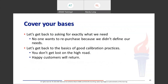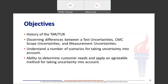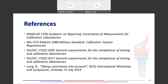We want to get back to asking for exactly what we need. If you're asking for a calibration service, you don't want to pay for that twice. Get back to the basics of good calibration practices — and I always like to say, you never get lost on the high road. Happy customers do return. So, we've talked about the history of the TAR and TUR, differences between test uncertainties, CMC scope uncertainties, and measurement uncertainties, a number of scenarios for taking uncertainty into account, and determining customer needs and coming to an agreement on how to take uncertainty into account. The references at the back include a good guidance document on reporting uncertainty in measurement, the old MIL-Standard 1705, and a paper I did several years ago.